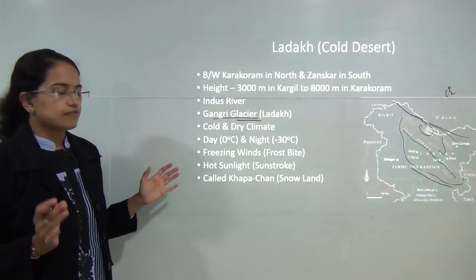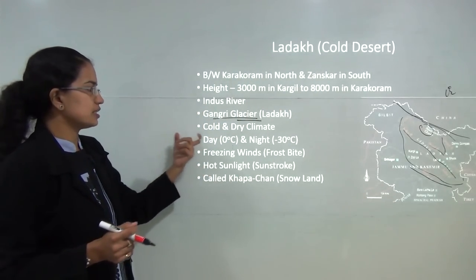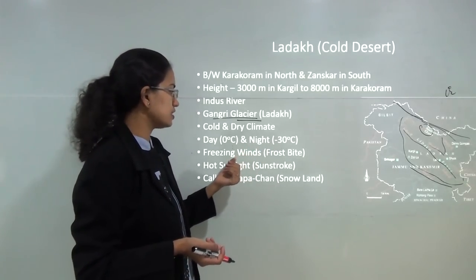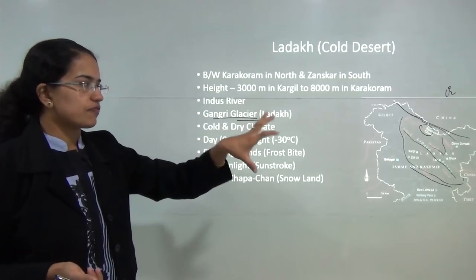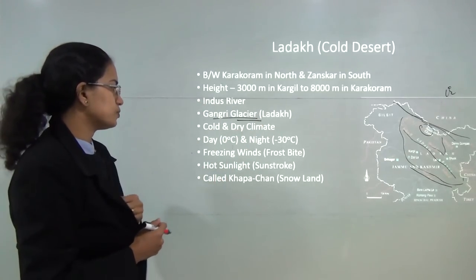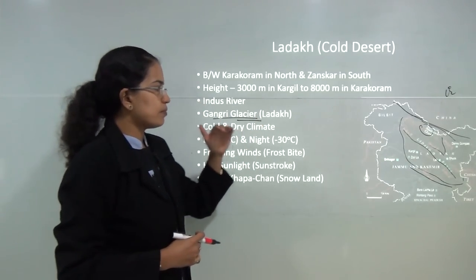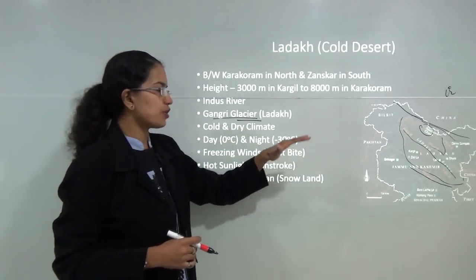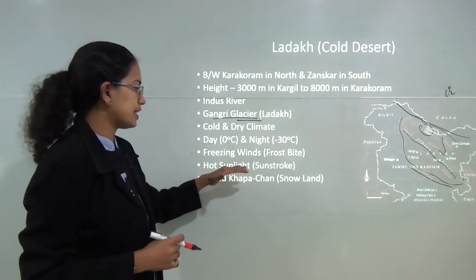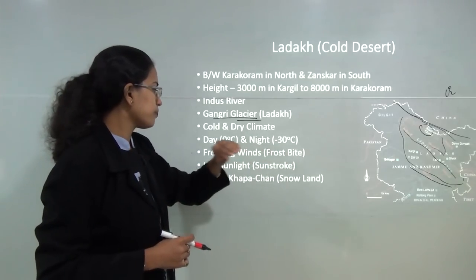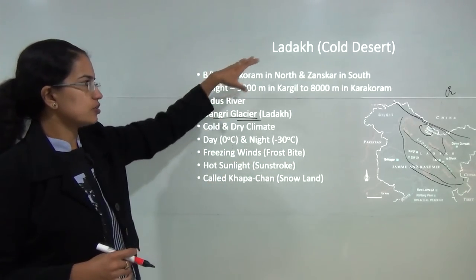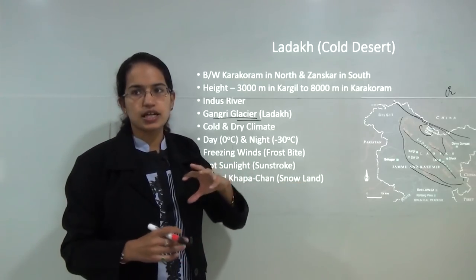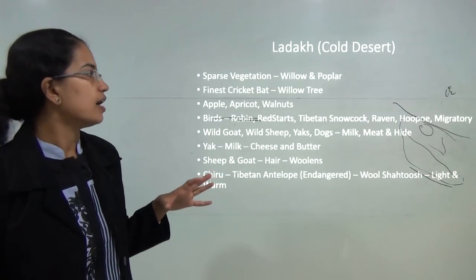This region lies between the Karakoram in the north and the Zanskar range in the south. The day and night temperatures are extreme. Since it is a cold desert, day temperatures are usually around 0 degrees, but at night it can go down to minus 30 degrees. Being at high elevation, the region is affected by both hot sunlight and freezing winds. The freezing winds can cause frostbite while the hot sunlight can cause sunstroke. The name Ladakh is derived from 'La-dwags', meaning a land of high passes with abundant snow.